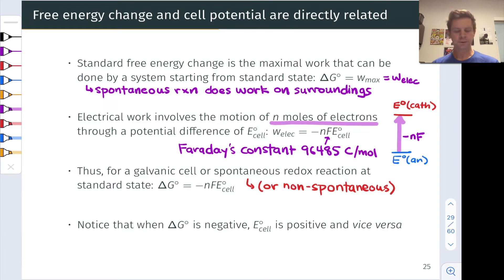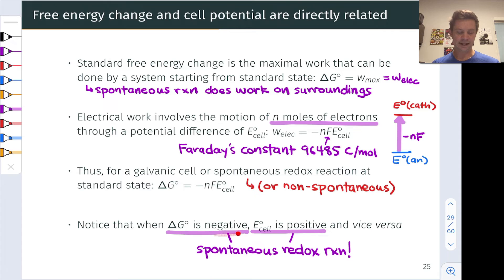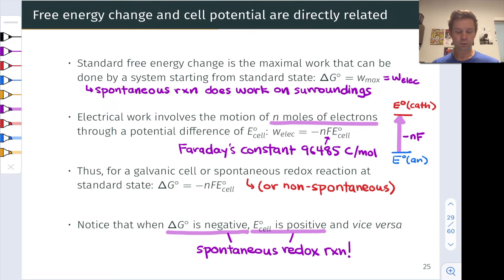And so notice that when the sign of ΔG° is negative, E°_cell is positive, and vice versa. When the sign of ΔG° is positive, E°_cell is negative. And so the case listed here with ΔG° negative and E°_cell positive corresponds to a spontaneous redox reaction, and naturally the opposite combination with ΔG° positive and E°_cell negative corresponds to a non-spontaneous redox reaction.